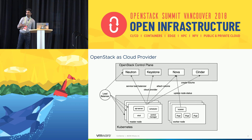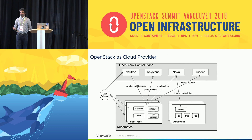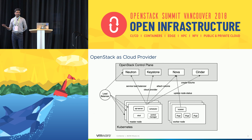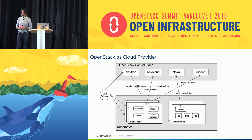Some of the common OpenStack services that upstream Kubernetes integrates with are Neutron, Keystone, Nova, and Cinder. Cinder is used for persistent volumes. Nova is where the Kubernetes worker nodes run — kubelets constantly query Nova instances to get the status of worker nodes and schedule workloads. Keystone is used for authentication, so anyone launching an application on Kubernetes can be authenticated against Keystone. Neutron is used for service load balancing and other networking capabilities.